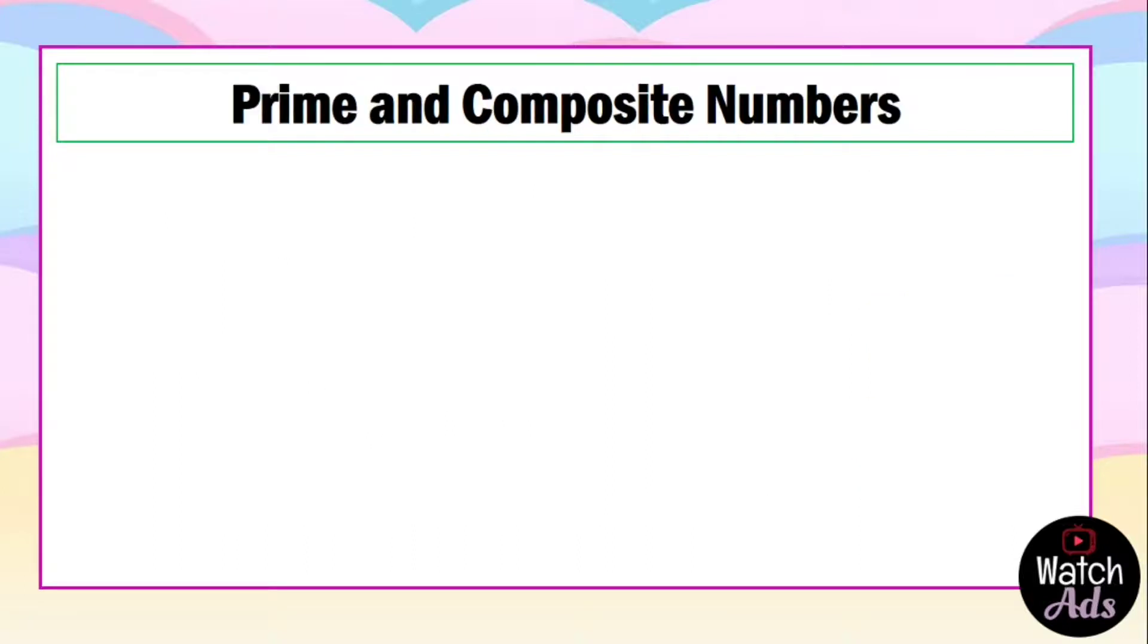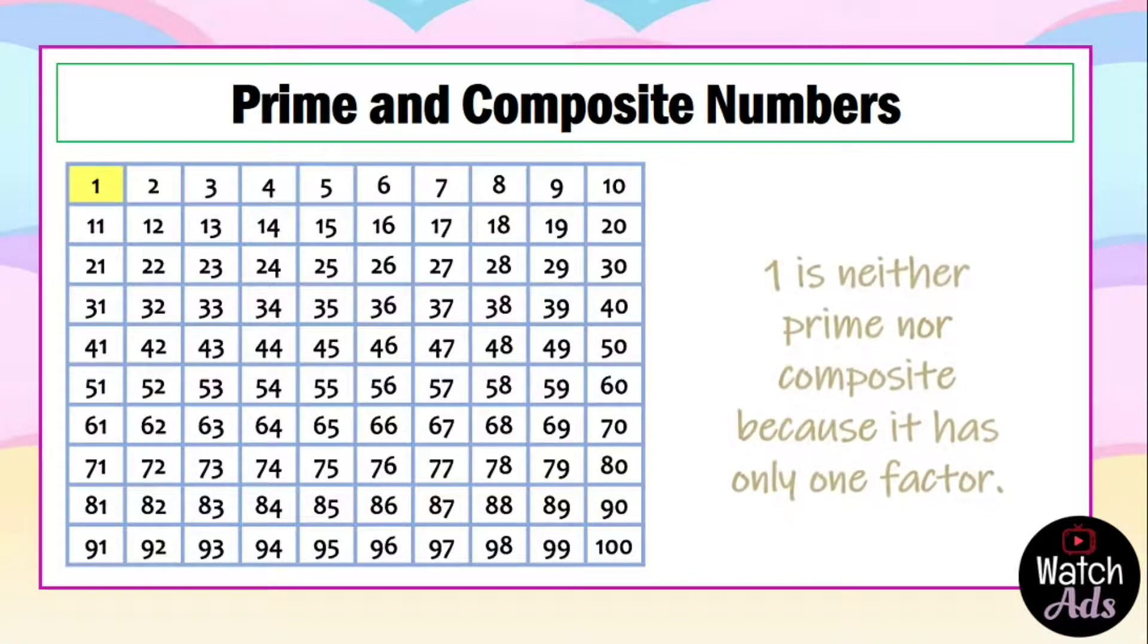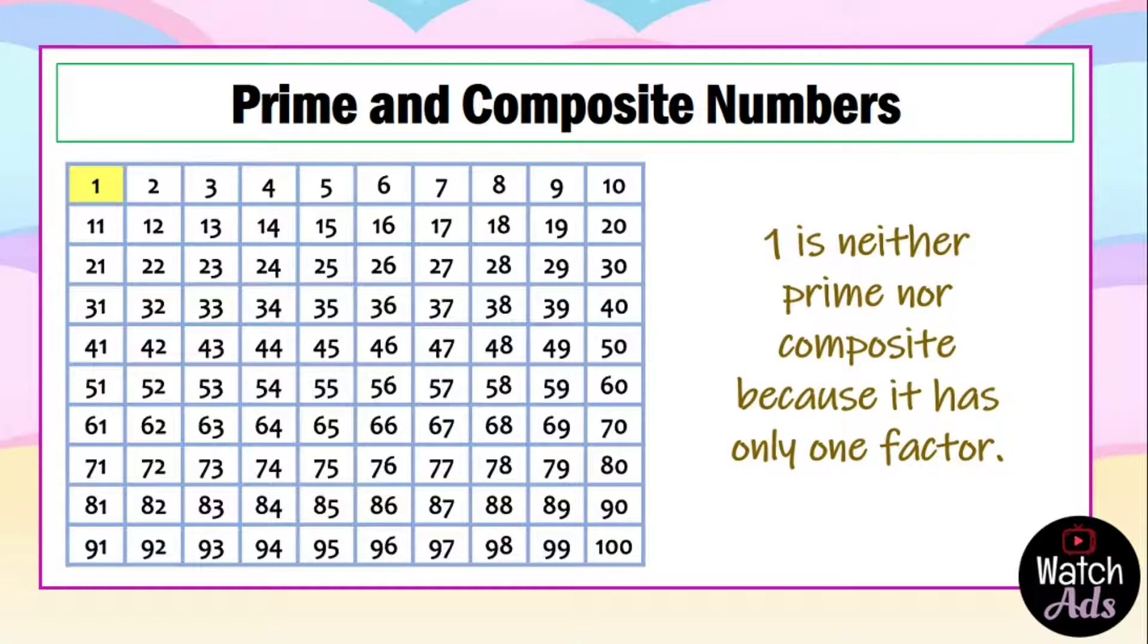Now let's look at the numbers 1 to 100. And here is our table. We will try to identify which of the numbers are prime and which of the numbers are composite. 1 is neither prime nor composite because it has only one factor, and that is 1.